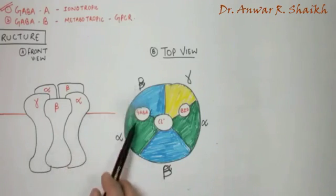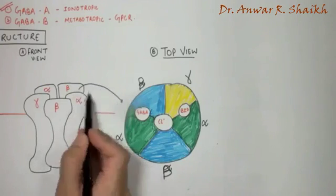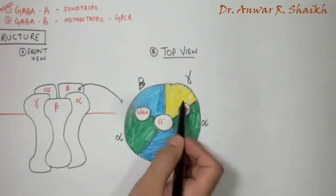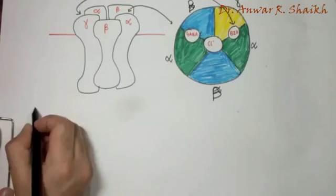In between the alpha and beta subunit is the barbiturate binding site seen here on this front view, whereas in between the alpha and gamma is the benzodiazepine binding site or BZD allosteric site.